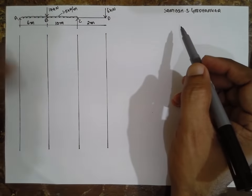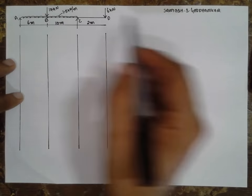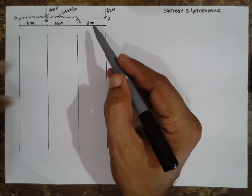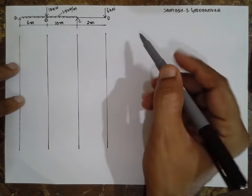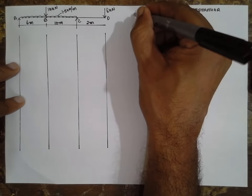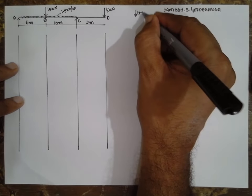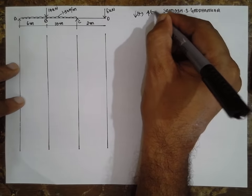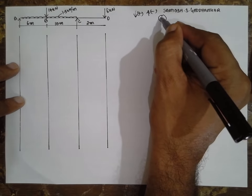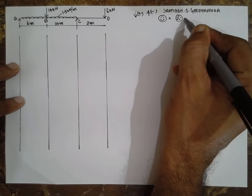I am Santosh Gadankar. Today I am teaching you the overhanging beam containing UDL and point loads. The sign convention is: downward arrow considered positive, upward negative, sagging positive, hogging negative.